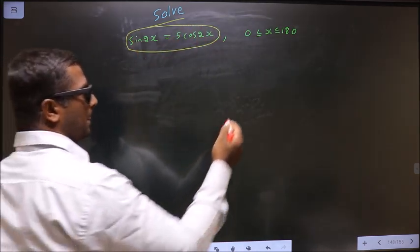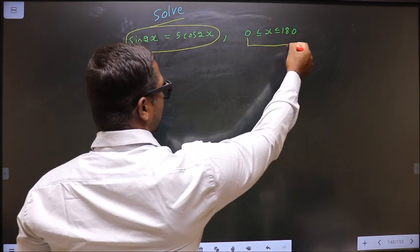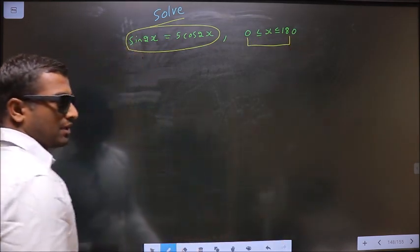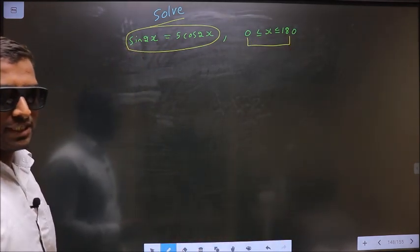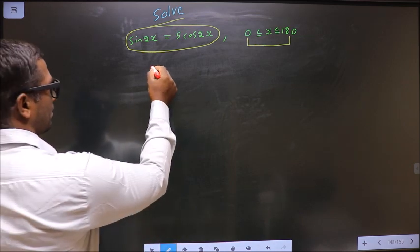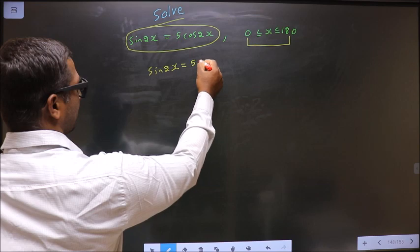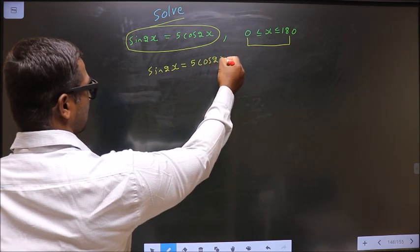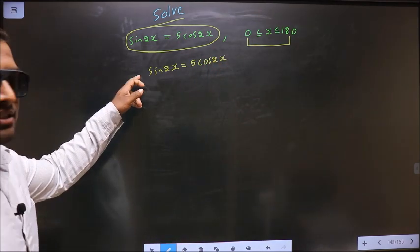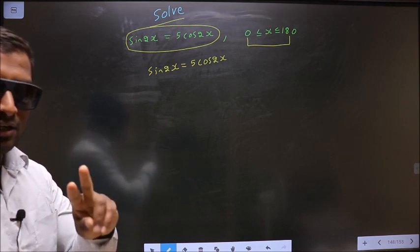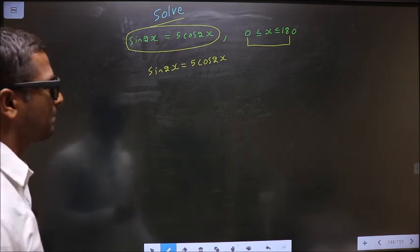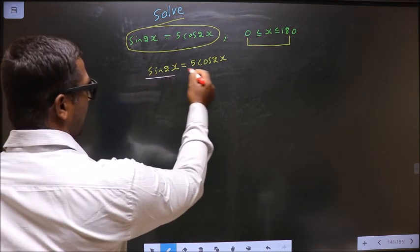And also it should lie between 0 to 180 degrees. First, the given equation is sin 2x equal to 5 cos 2x. In this equation, there are two trigonometric ratios: sin and cos.